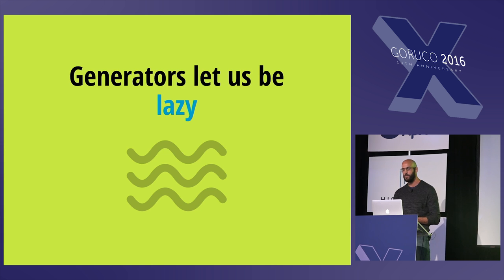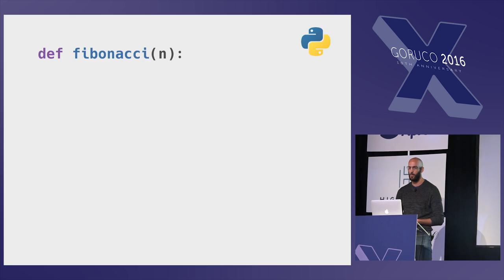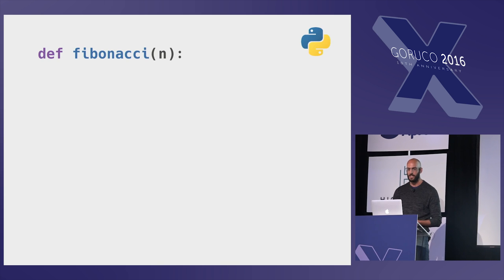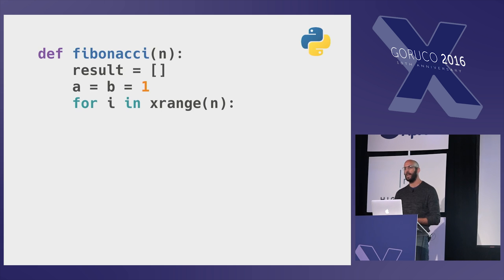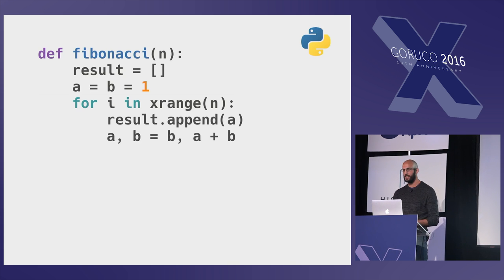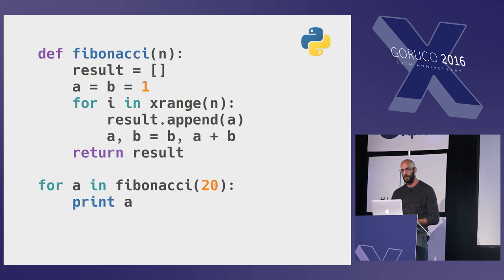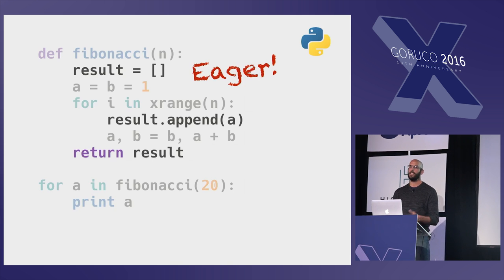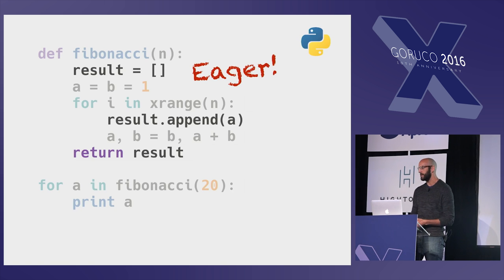A key benefit of generators is that they let us be lazy. I'm actually going to use some Python code to show what I mean. Imagine we write a Fibonacci function: given n, return the first n values of Fibonacci. We could start with an empty list, loop n times, calculate and append each member of the sequence to the list, then return the result. We can iterate through this list with a for loop. This is an eager expression — all the values are calculated before the function returns. Everything is produced in memory up front.